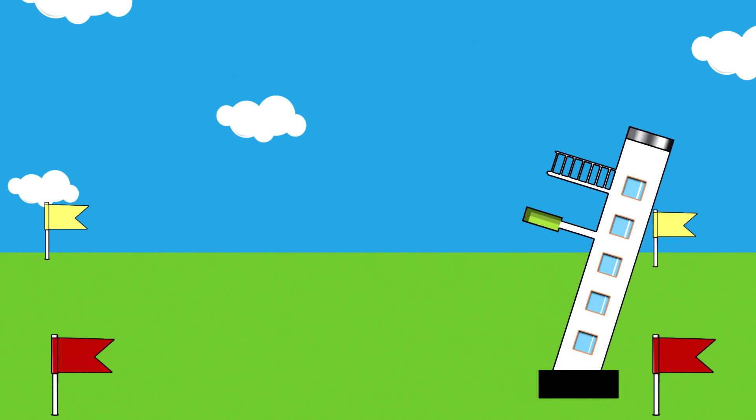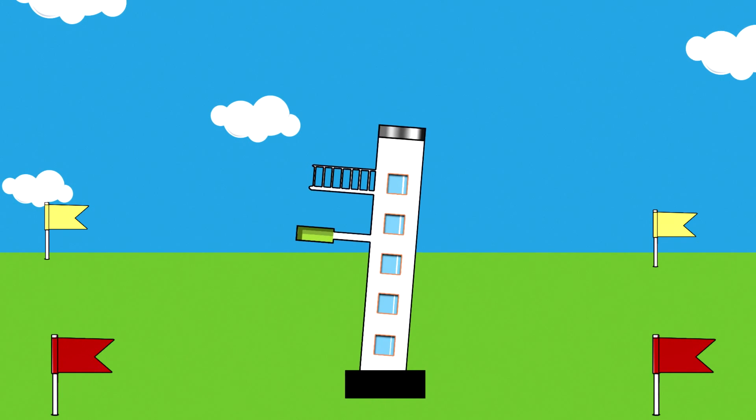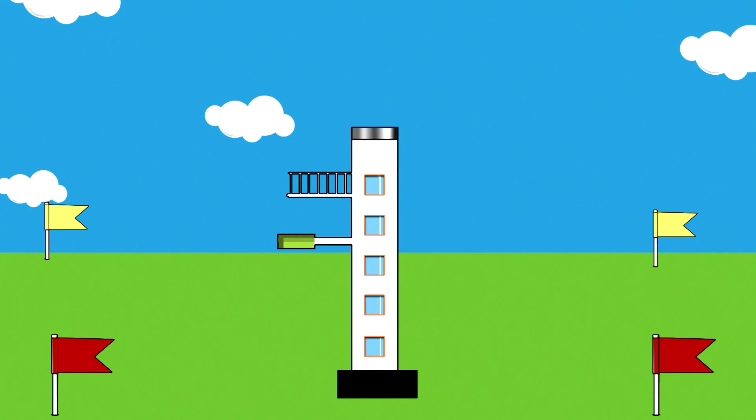Hi kids, today let's find out how the rocket runs. The rocket consists of three main parts.